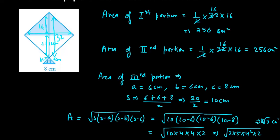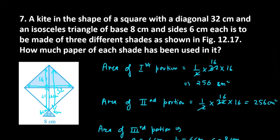So you have the three values: the first one is 256, the second one is 256, and the third one is 8 root 5. This is the area of these three portions. Now we will be starting with the next problem, question number 8.